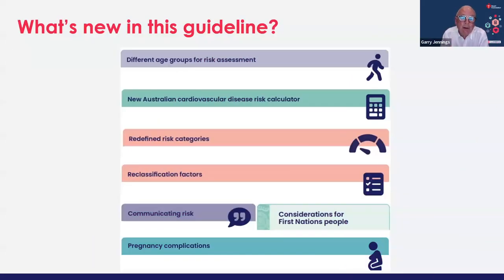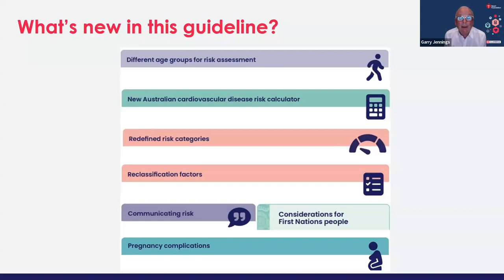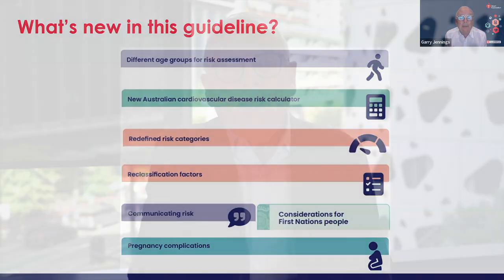There's been a great emphasis on communicating risk in a way that's appropriate to consumers, and there was an important overlay regarding First Nations people's input. There are a number of new things brought into play in the guideline, of which pregnancy complications is only one. There are also things like socioeconomic factors, mental health, and a range of other considerations.